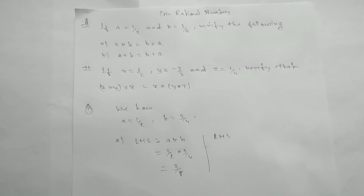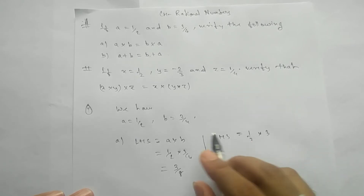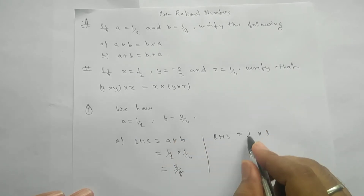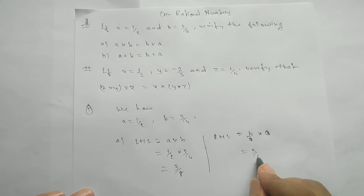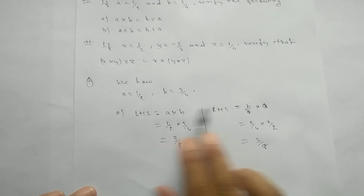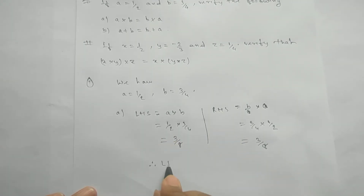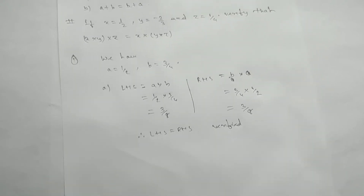For RHS, we write b into a first. In place of b we write three by four, and on the other side we have one by two. Multiplying gives us three by eight. Therefore, you can see that LHS and RHS are equal. Therefore LHS equals RHS — verified. This completes the first part.